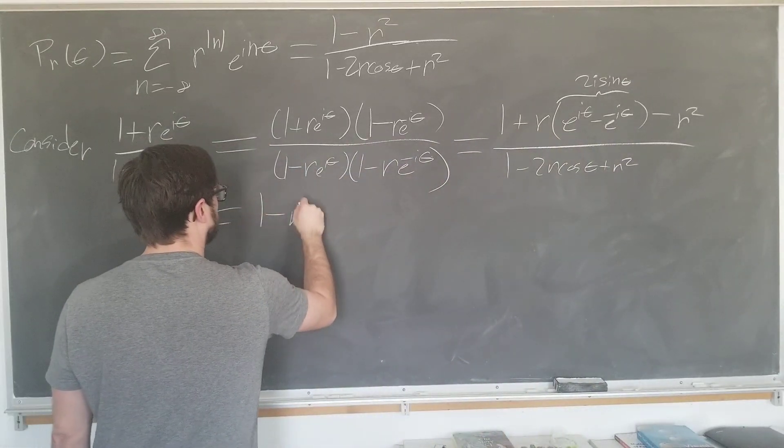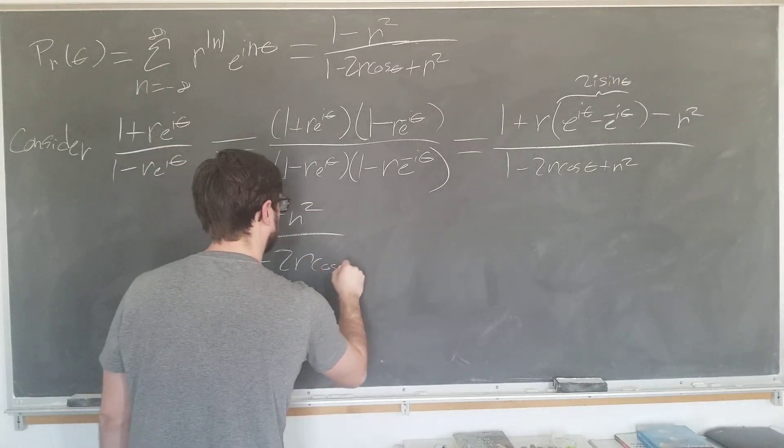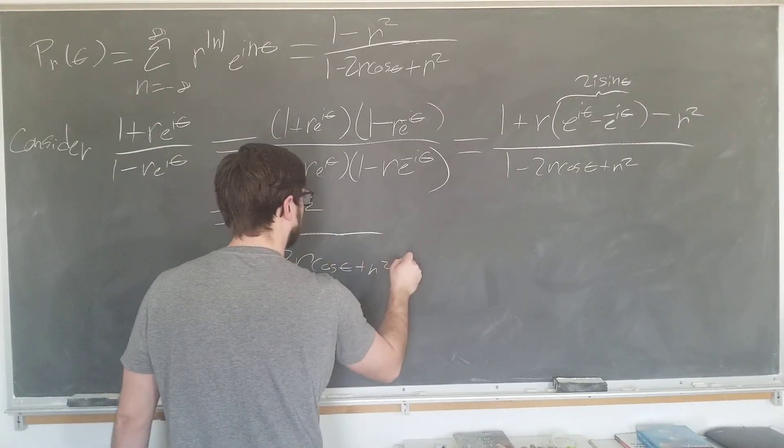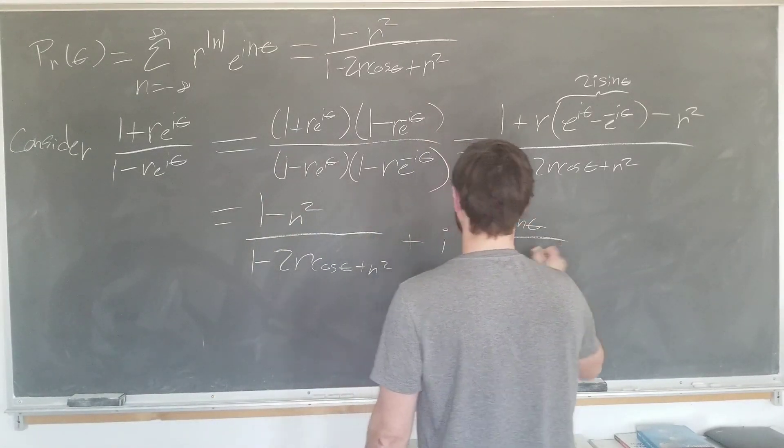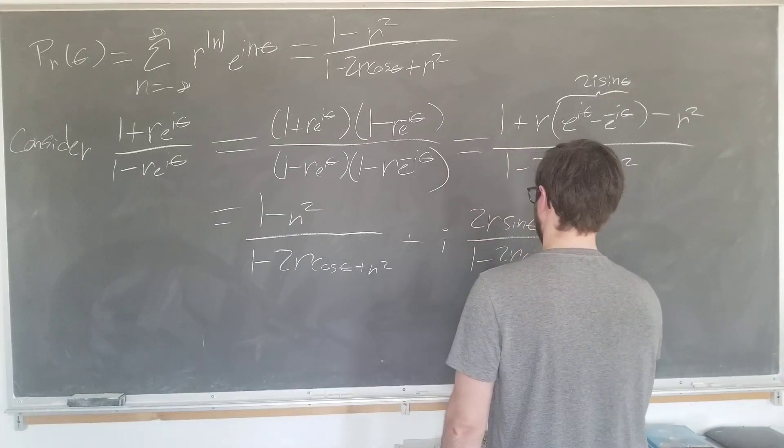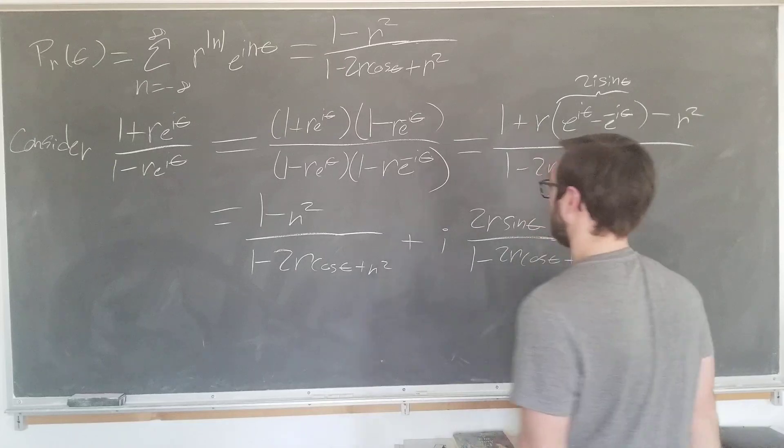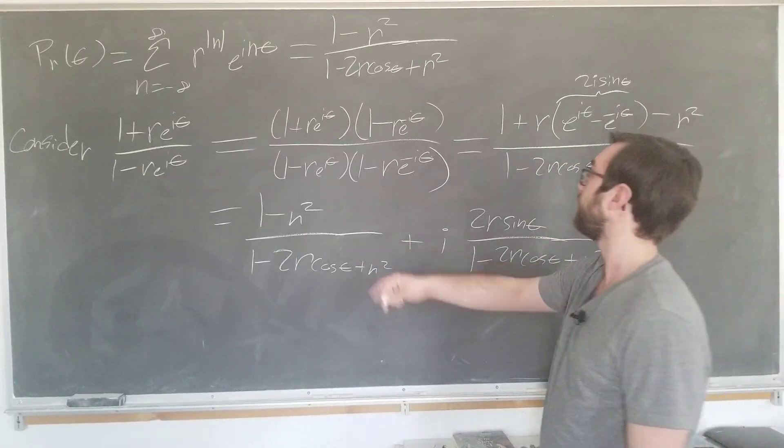And if we recognize this as 2i times sine of the angle theta, we can now write this result. 1 minus r squared over the denominator. And there's an imaginary component 2r sine theta over the same denominator. So we can recognize the Poisson kernel p_r theta as being the real part of this expression.